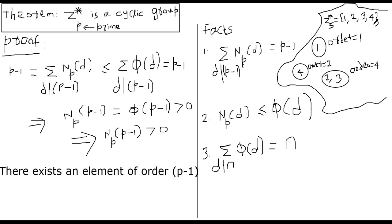I am going to partition the elements of z*5 into different buckets. Here I put all elements of order 1 — only 1, because 1 to the power 1 is 1. How many elements have order 2? Only 4 has order 2, because 4 squared is 1 in mod 5. For elements of order 4: 2 and 3, because 2 to the power 4 is 1, and 3 to the power 4 is also 1 in mod 5. So I have partitioned the elements of the group into different buckets.